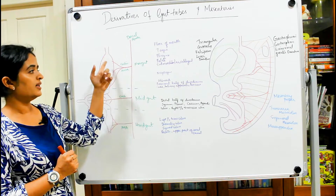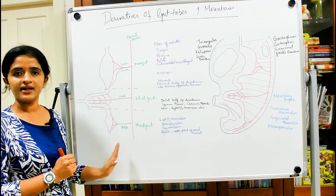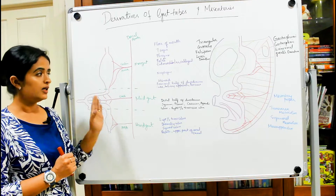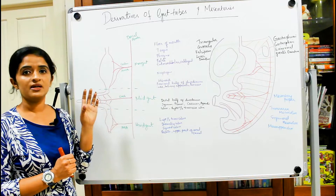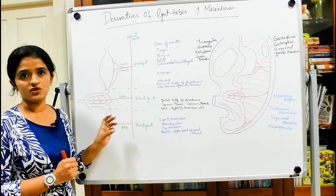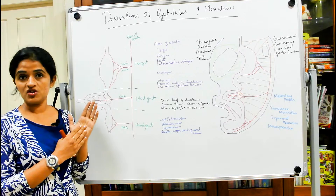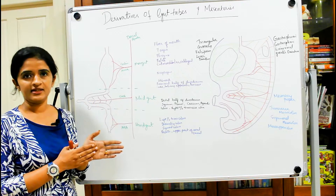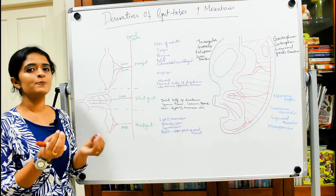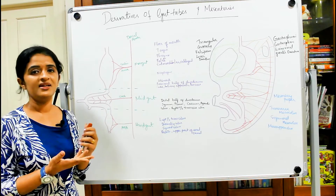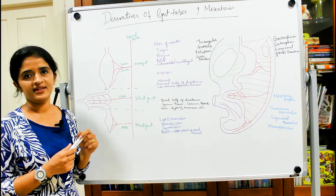We know that the gut is divided into foregut, midgut, and hindgut. We are going to see what gastrointestinal parts are derived from each of the three divisions. The book I am following is the embryology textbook by A.K. Dutta, because in many other textbooks there will be some confusions that might need clarification.